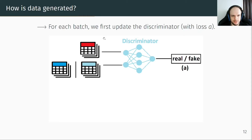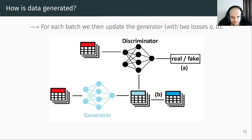For each batch, we first update the discriminator with loss A, which is a binary cross-entropy. The batch is the number of data seen at the same time by the GAN. The goal of the generator is to fool the discriminator by generating fake data. We give to the generator the trace from domain A as input and the trace from domain B as output — the GAN trains to translate traces from domain A to domain B. We then update the generator with two losses, A and B.